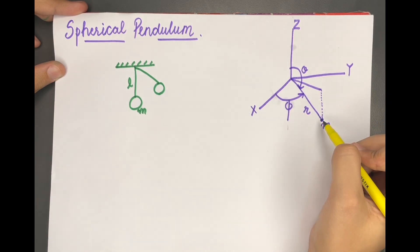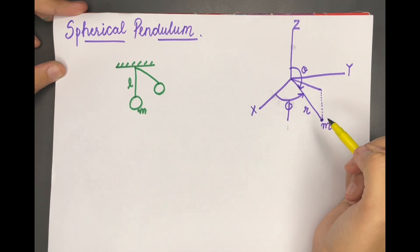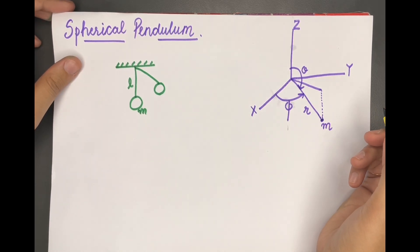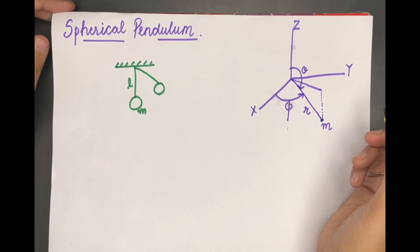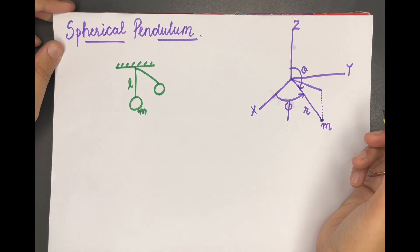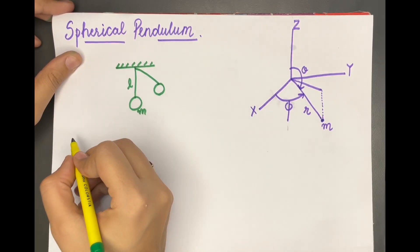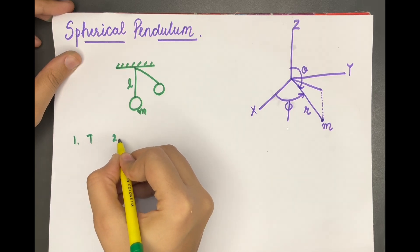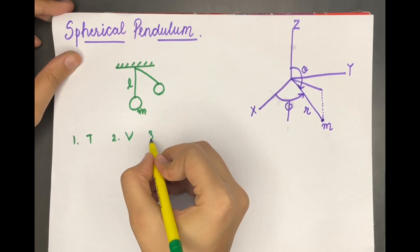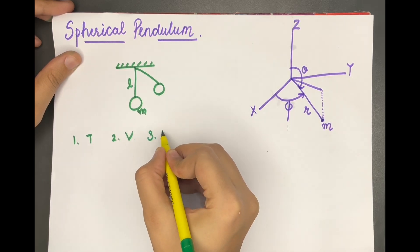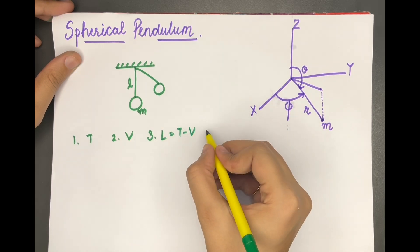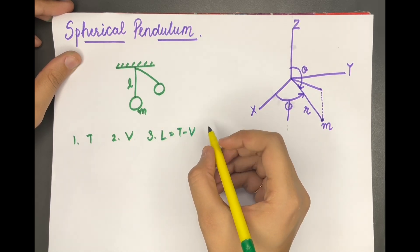We already know the steps to be followed to calculate the equation of motion using the Euler-Lagrange equation. Our first step is to calculate kinetic energy. The second step is to calculate potential energy. The third step is to calculate L, which is T minus V.